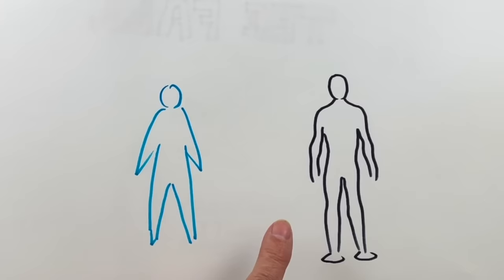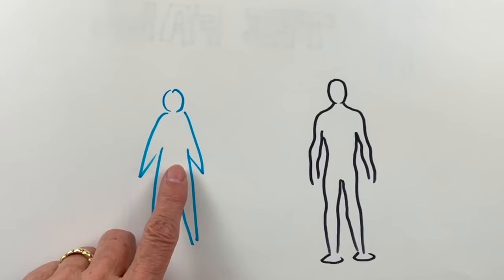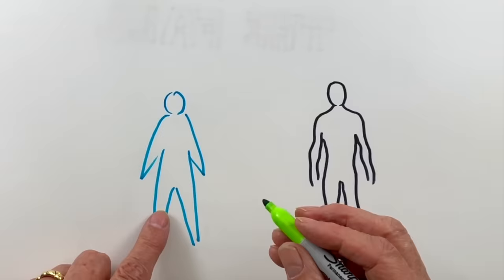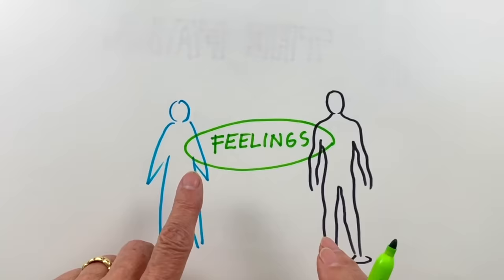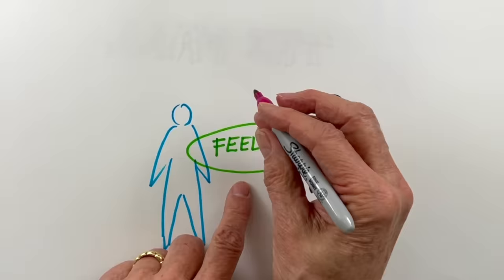But our soul does not have thoughts or words to communicate with. Instead, it makes itself noticeable via the sounding board of our feelings. Because feelings are the switching points between the soul and the physical body. So here we have the feelings. And now the soul communicates via the corresponding moods that result from the feelings.